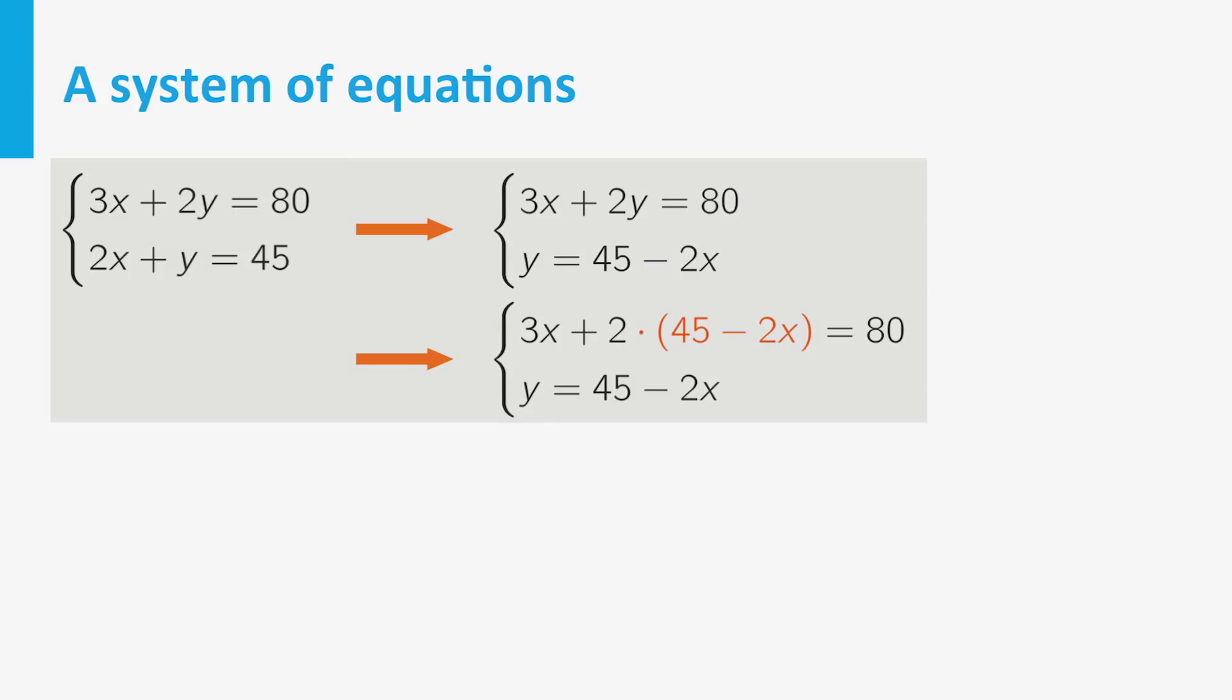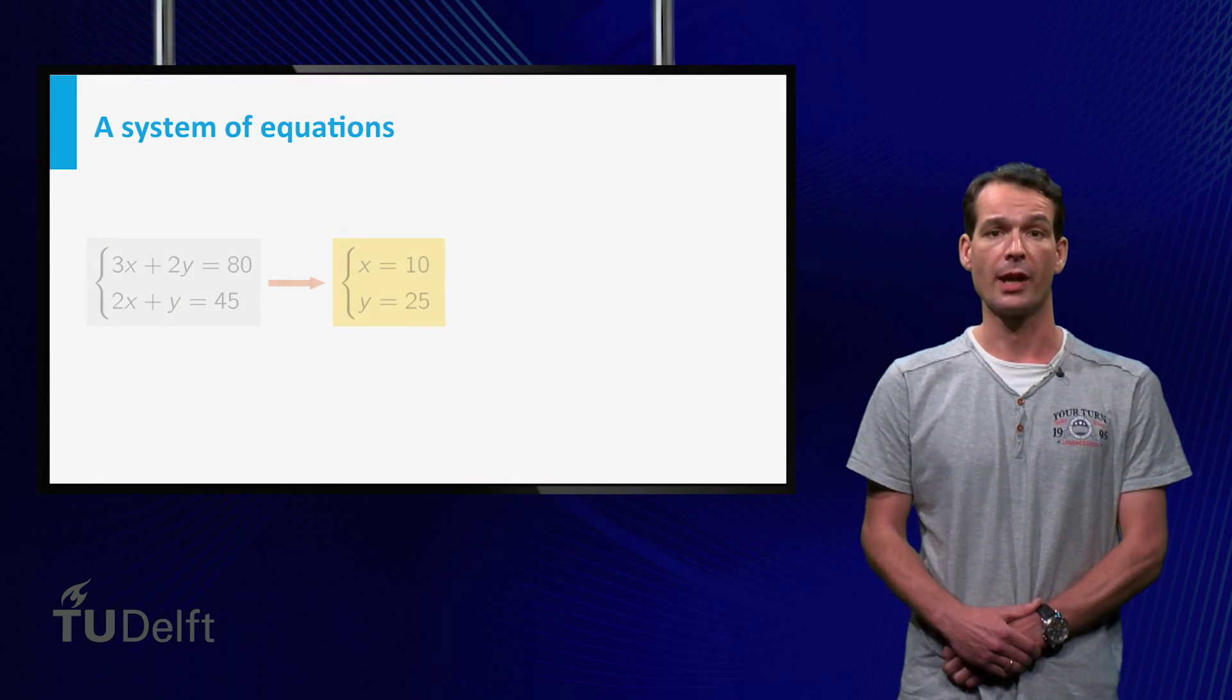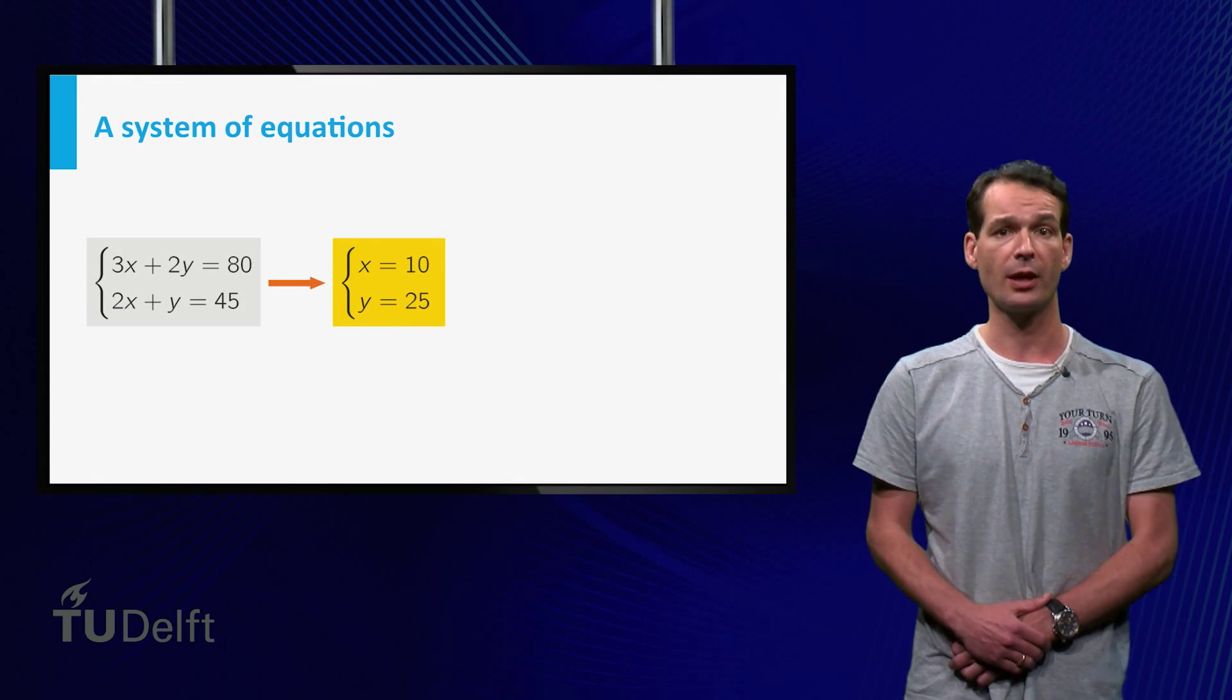This gives us an equation in only one variable. Expanding the brackets, we obtain 90 minus x equals 80. Solving this gives the solution x equals 10, and putting this back into the equation y equals 45 minus 2x, we see that y equals 25. So we have 10 silver coins and 25 gold ones.